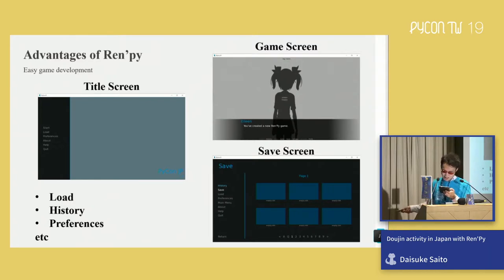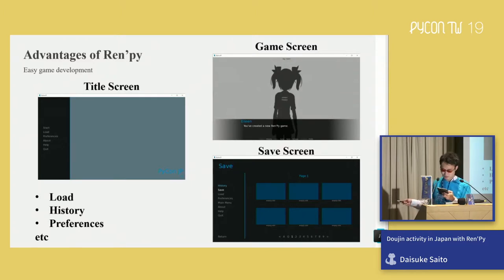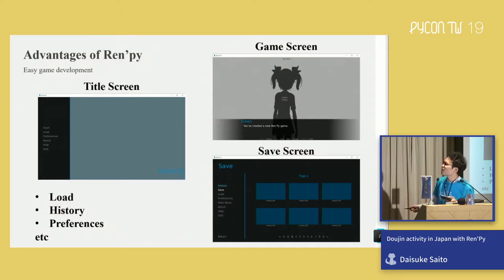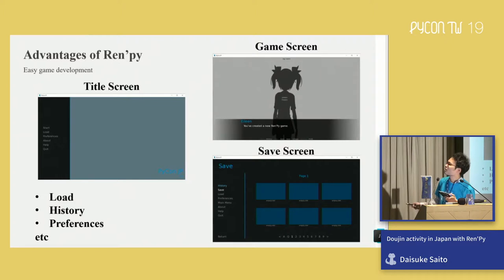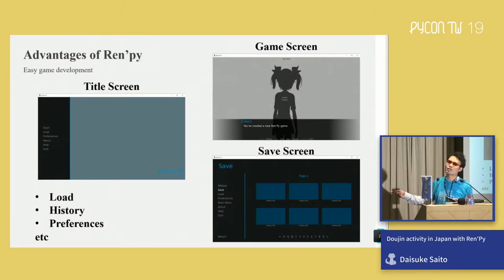In the basic RenPy project, the necessary functions for a visual novel game are available from the beginning — for example: main menu, save functions, history function, preference function, save screen, and game screen. All these functions are included by default in the basic project.